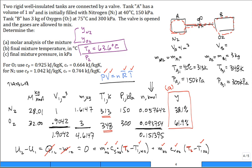For the final pressure, we go back to the ideal gas law. At the final state, knowing the total volume (1.9042 m³), the total number of moles (0.151395 kmol), and the final temperature (T₂ = 63.6°C = 336.6 K), we calculate: P₂ = n · R̄ · T₂ / V₂ = 0.151395 × 8.314 × 336.6 / 1.9042. The final pressure comes out to 223 kPa.